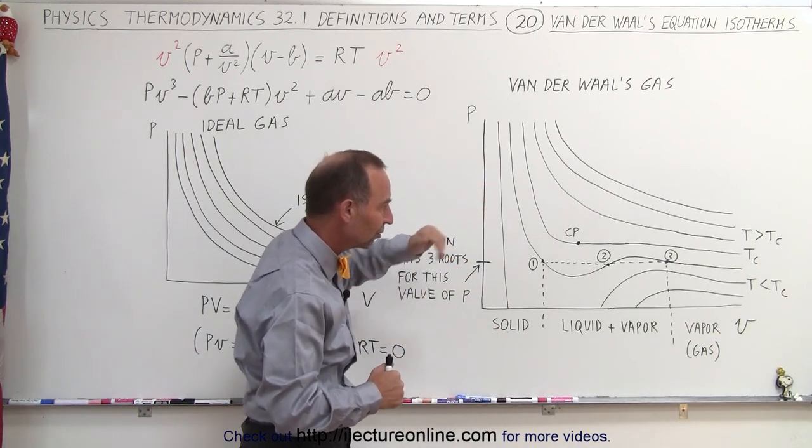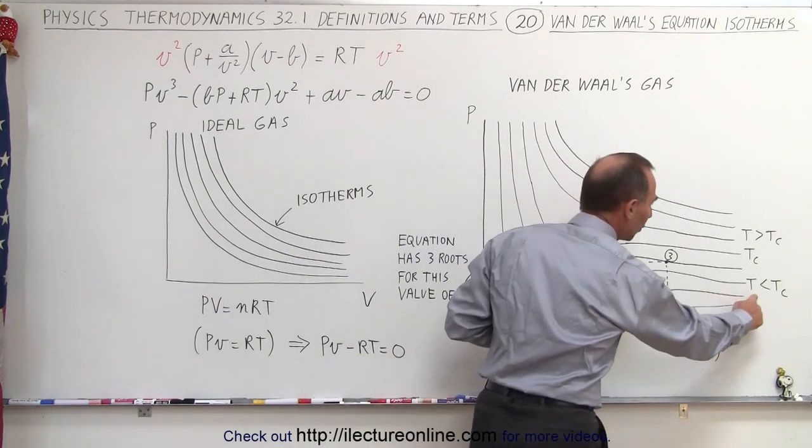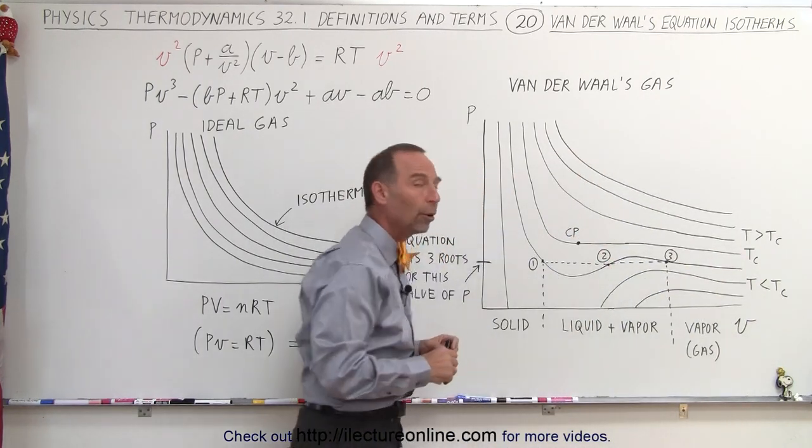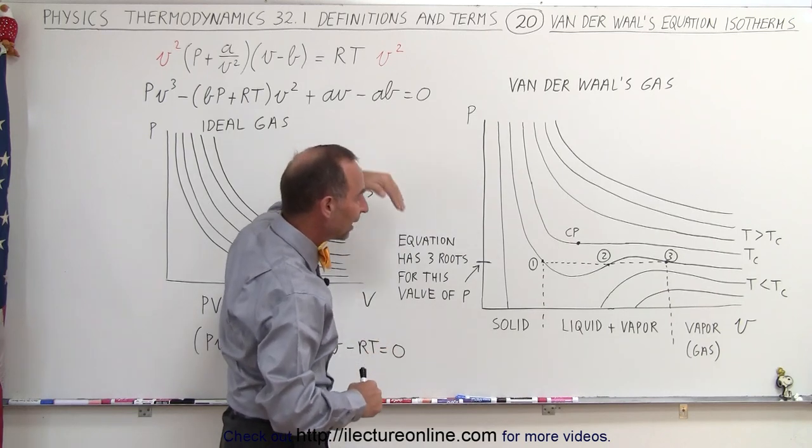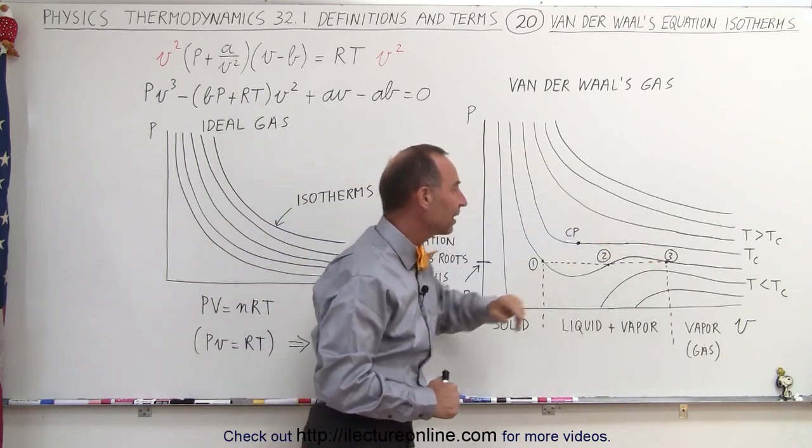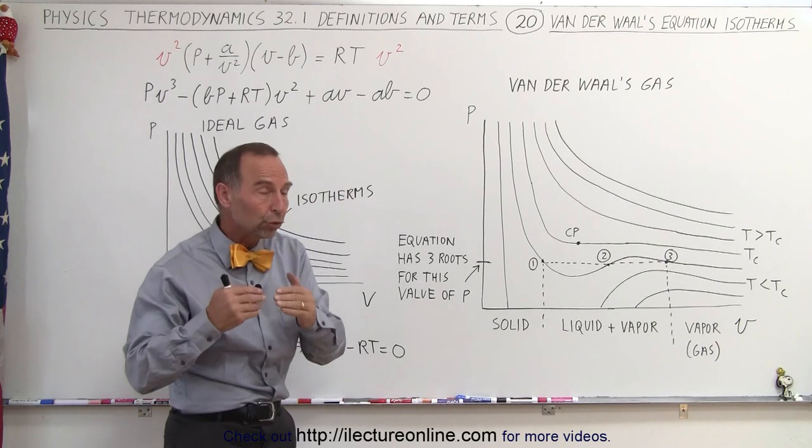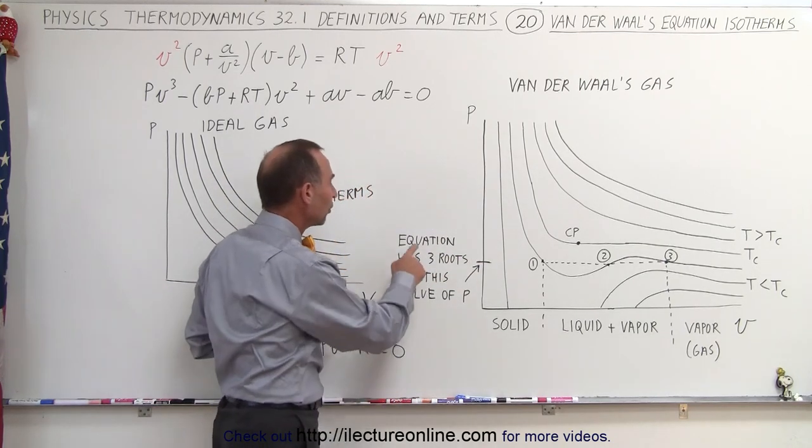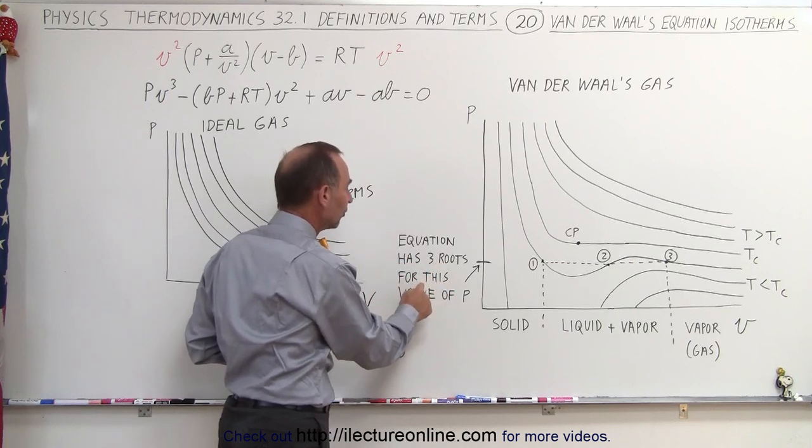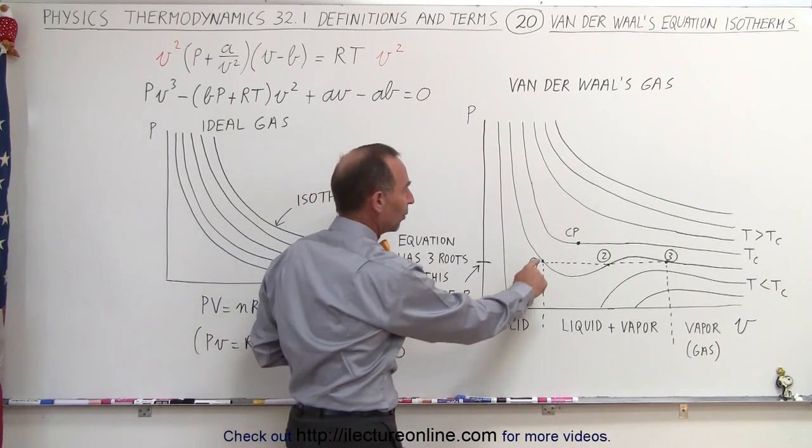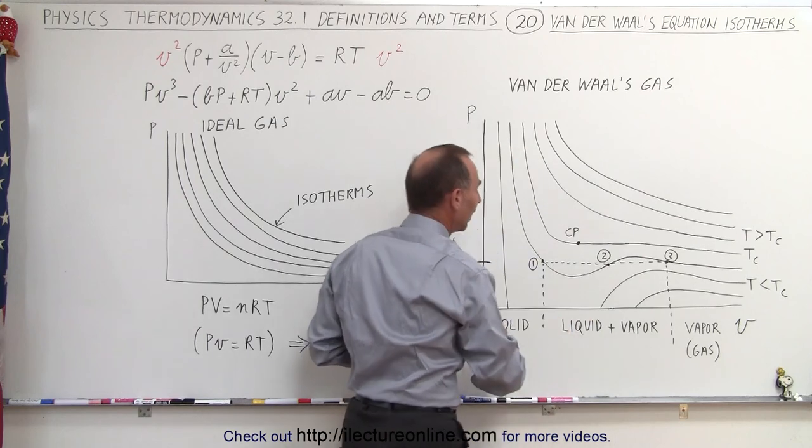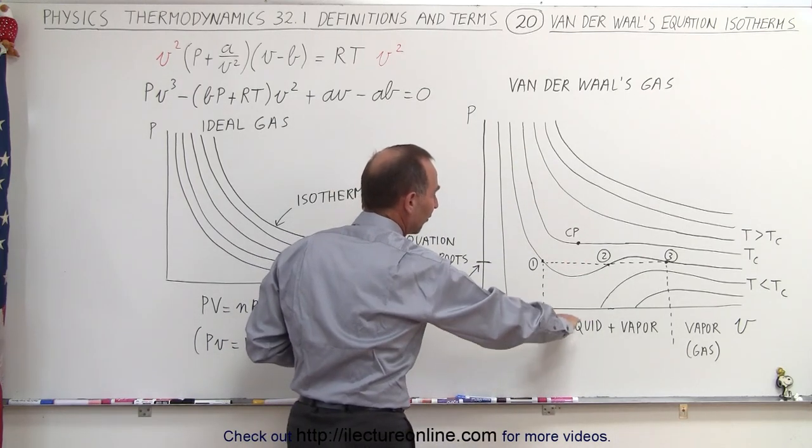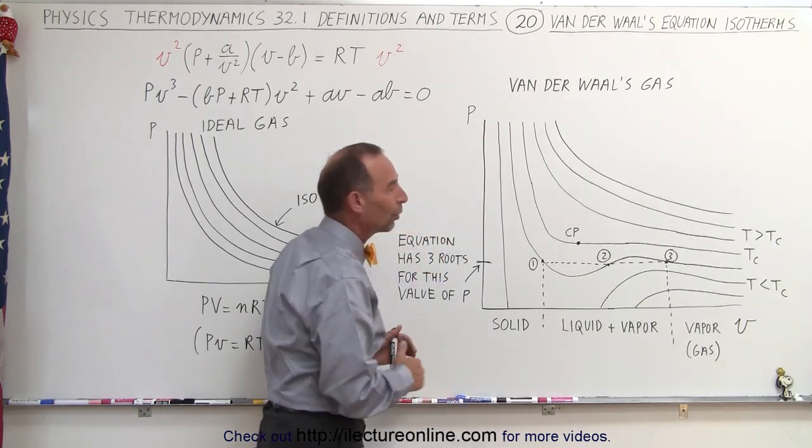Then as the temperature continues to decrease, for temperatures lower than the critical temperature, then you can see that the graph begins to oscillate like that, and we begin to have roots relative to any particular value on the vertical axis. Notice the equation has three roots for this particular value of p, over here, over there, and over there, and you can see that things continue to change as the temperature drops, and eventually it kind of drops below the graph here.